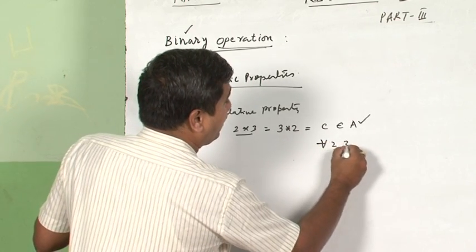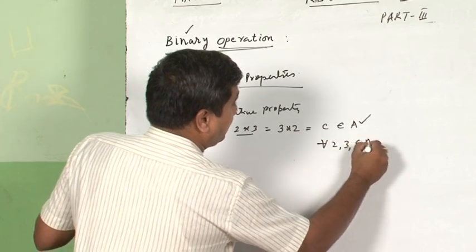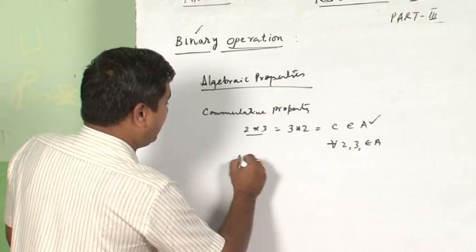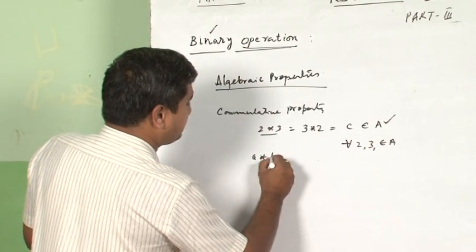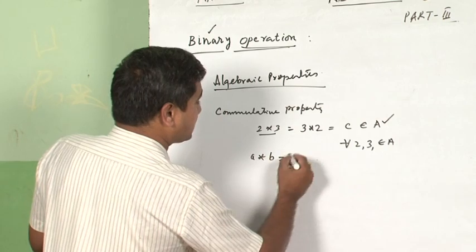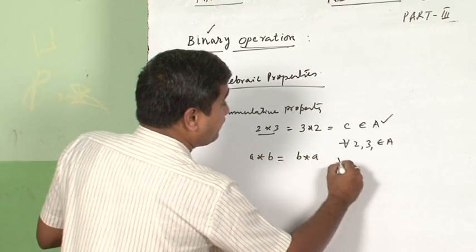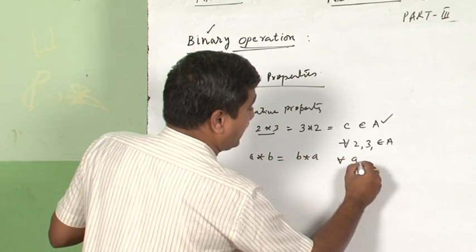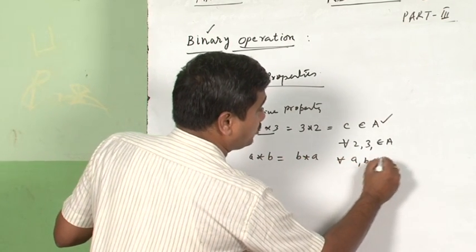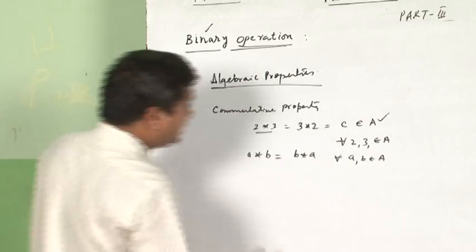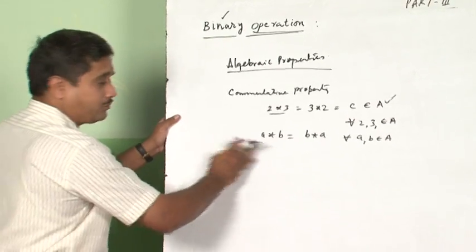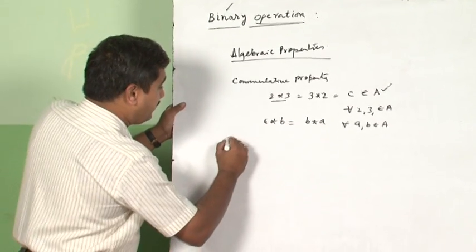A and B are taken. For example, if we write in a general perspective, A★B is equal to B★A for every A, B belonging to capital A. This is called the commutative property.